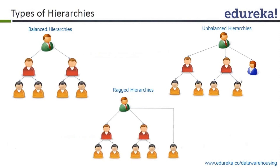Another type of hierarchy is called a ragged hierarchy, where the parent-child relationship skips a level. In the diagram, there is a child at the lowest level which is directly related to a parent at the second level, skipping a level entirely. These hierarchies where a child skips a level of relationship with its parent are called ragged hierarchies.